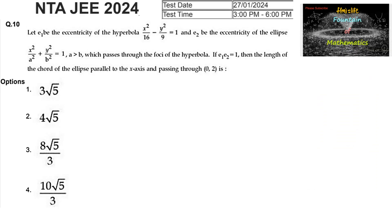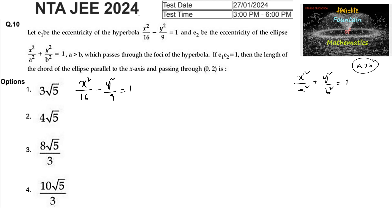Let e1 be the eccentricity of the hyperbola x²/16 - y²/9 = 1, and e2 be the eccentricity of the ellipse x²/a² + y²/b² = 1, where a > b, which passes through the foci of the hyperbola. If e1·e2 = 1, then find the length of the chord of the ellipse parallel to the x-axis and passing through (0, 2).